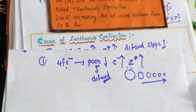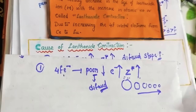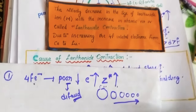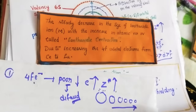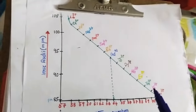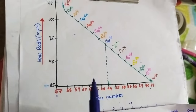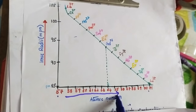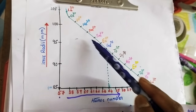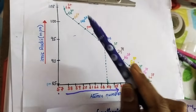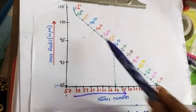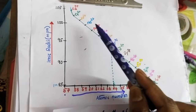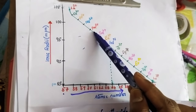Next, let's look at the graphical representation of lanthanide contraction before moving to the consequences. In the graph, the x-axis shows atomic number from lanthanum to lutetium (57 to 71). As atomic number increases, the ionic radii gradually decrease from 105 to 85 picometers.